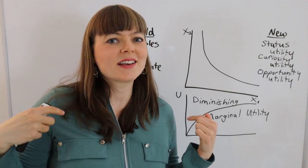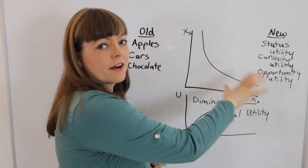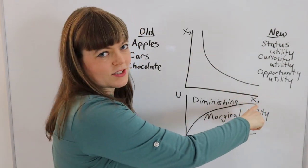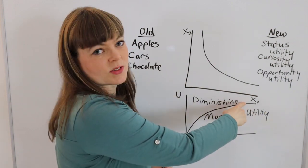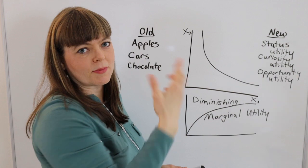I would like to make an argument that we as economists need to change what we have on the axes for these two graphs. And that's specifically what is normally thought of as good x1, which might be apples, and good x2, which might be chocolate.